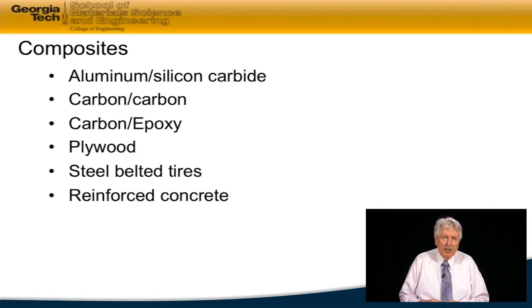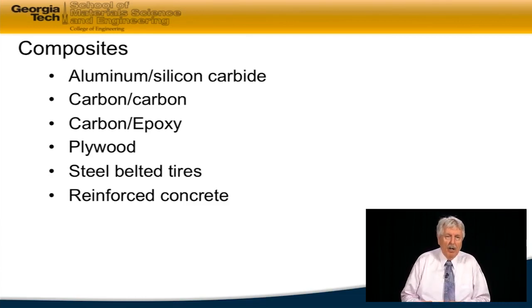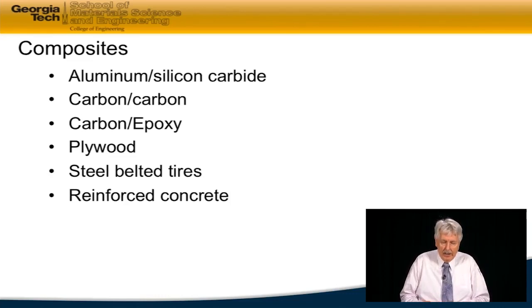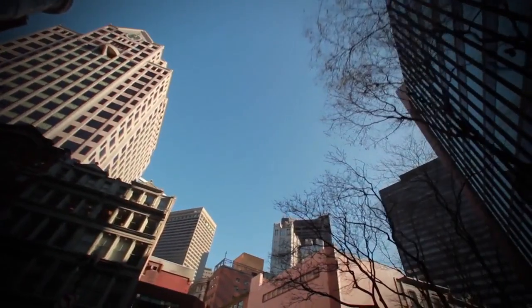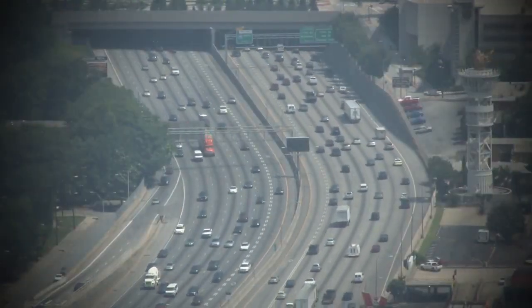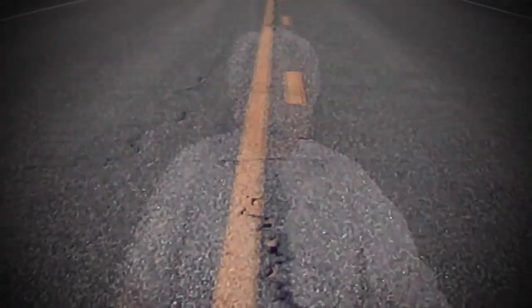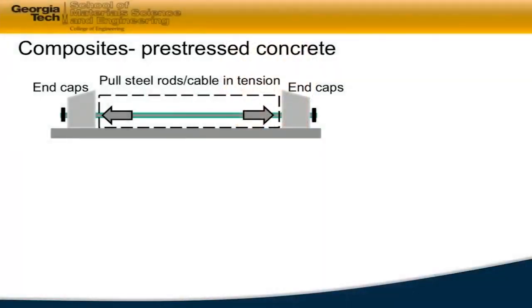The last example on this list is reinforced concrete. Reinforced concrete is made up of two individual materials: a steel material and a concrete material. Everywhere you look in terms of structural materials — buildings, roadways, and road beds — there is a large amount of pre-stressed concrete being used. Again, it is a two-material unit.